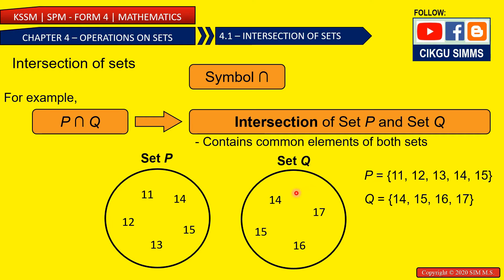And for set Q, 14, 15, 16, and 17. And they are all listed inside this bracket. This is set P and this is set Q. You can notice that the common elements are 14 and 15, right? 14 and 15.